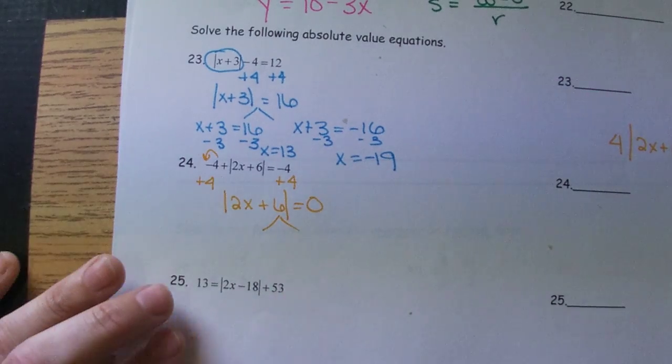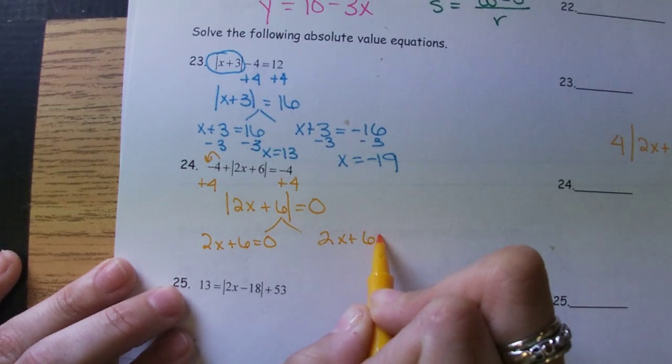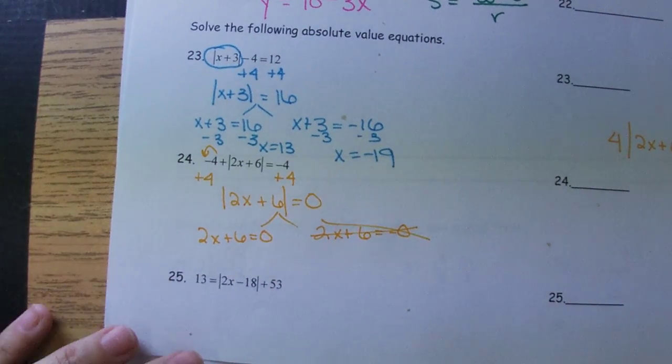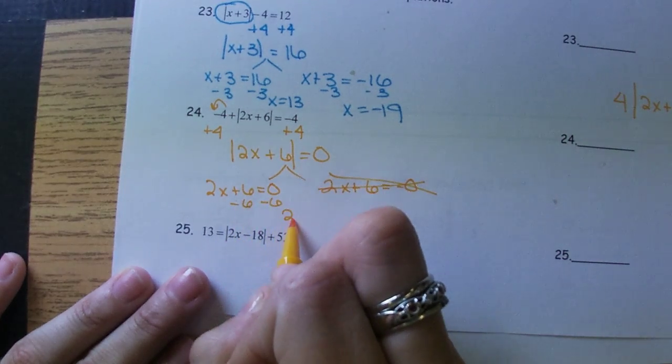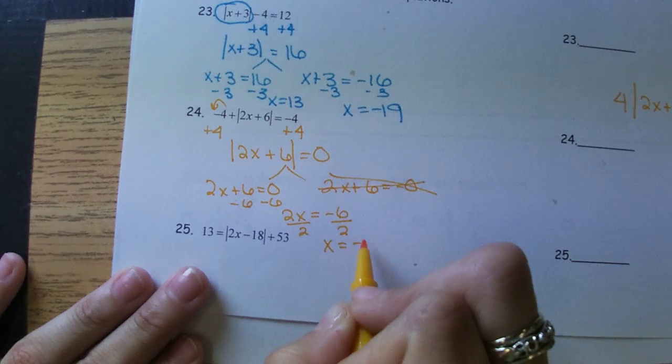Splitting this into two options, is a 2X plus 6 equals 0, and a 2X plus 6 equals negative 0. And this one just doesn't make sense. We don't have a negative and positive 0. So that just leaves us 1 to solve. So X equals negative 3.